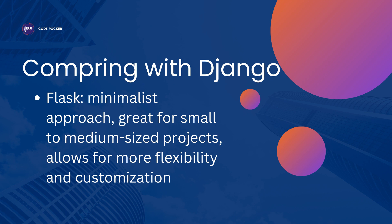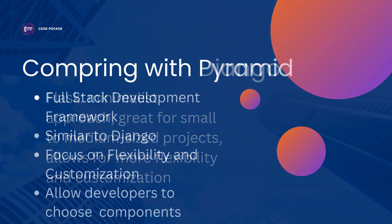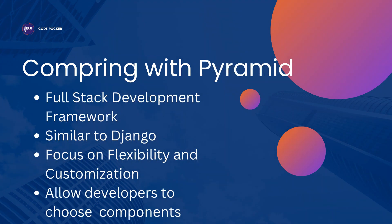Next, let's compare Flask with other popular Python frameworks such as Pyramid, Tornado, and FastAPI. Pyramid is another full-stack framework similar to Django, but with a focus on flexibility and customization. It allows developers to choose the components they want to use, making it a good choice for projects of all sizes.